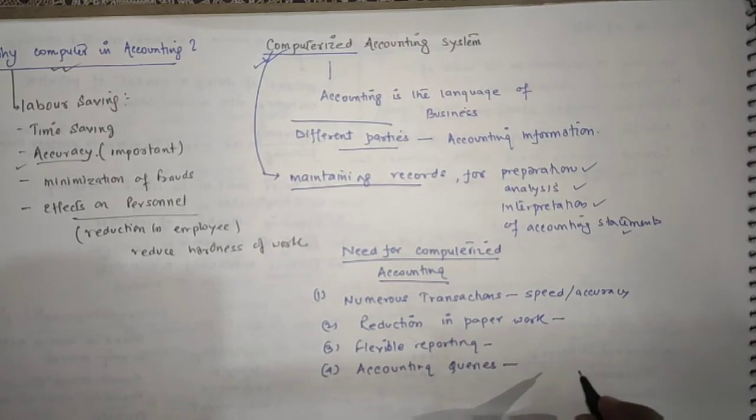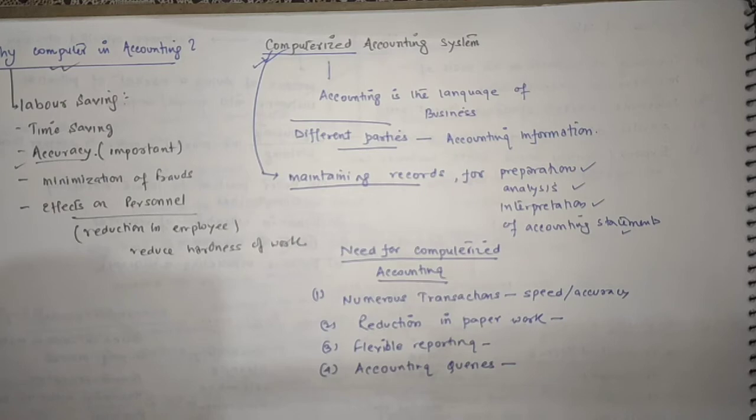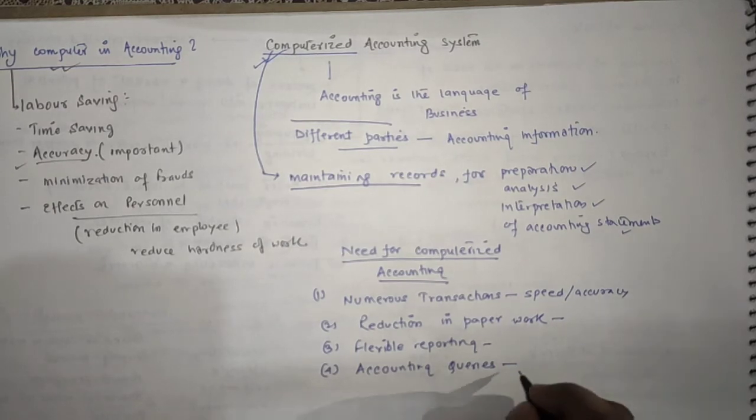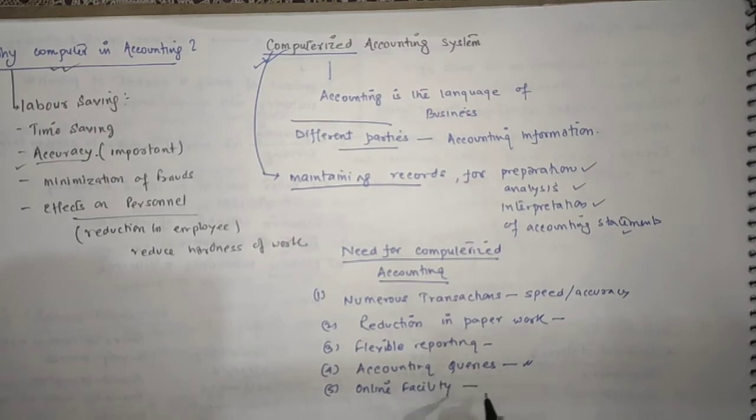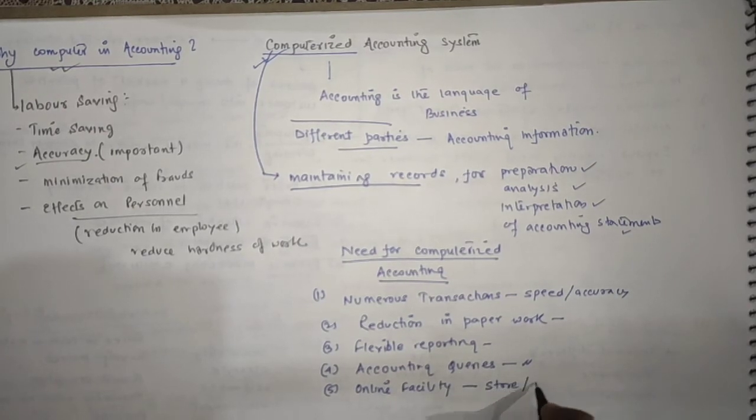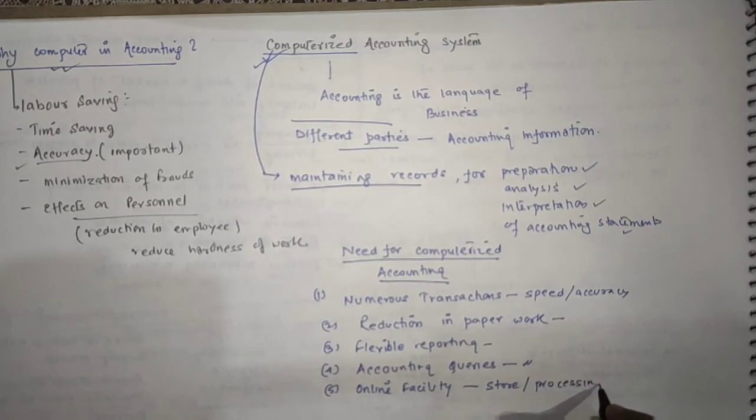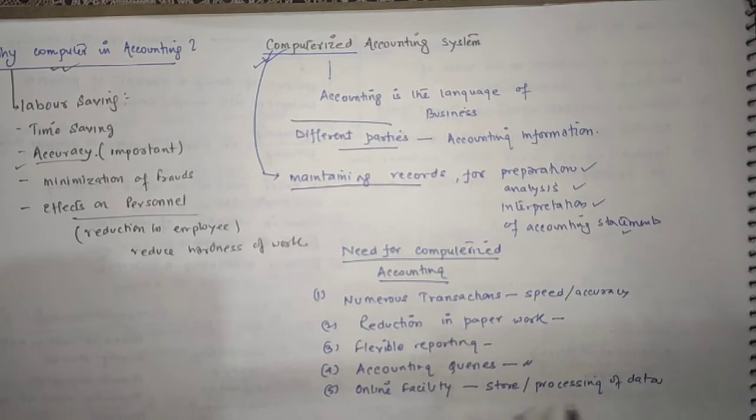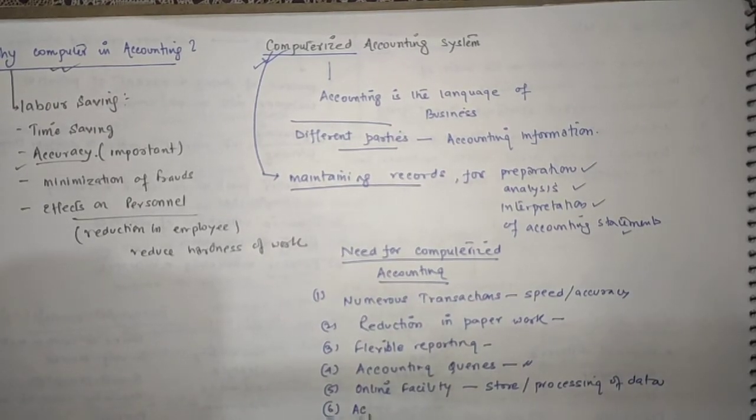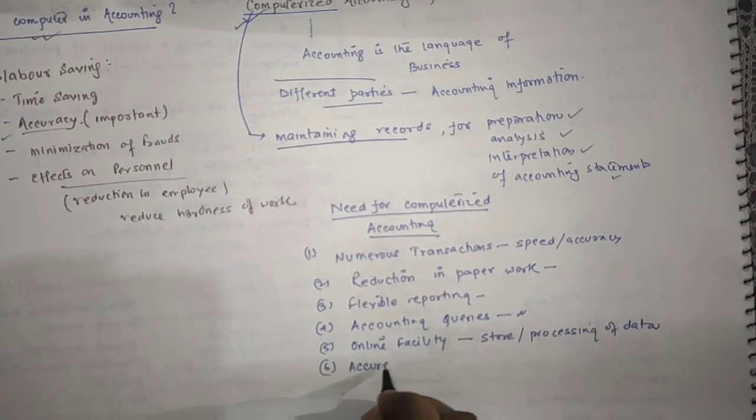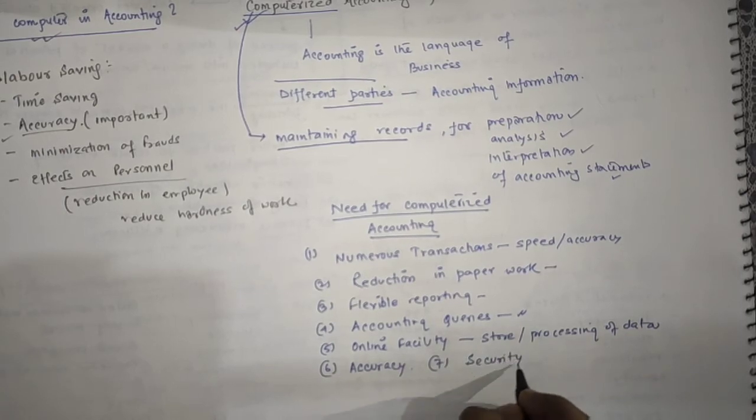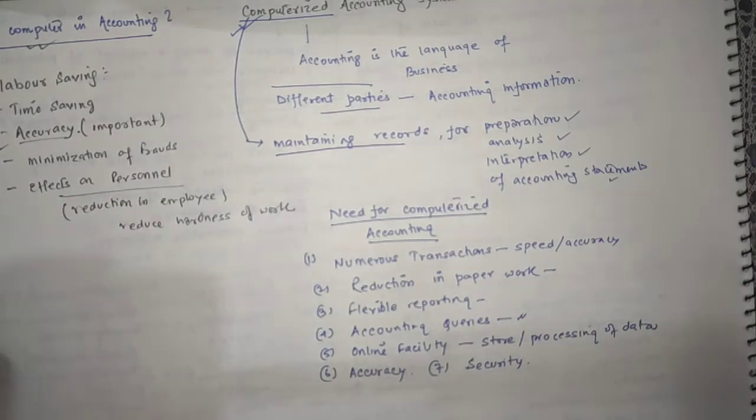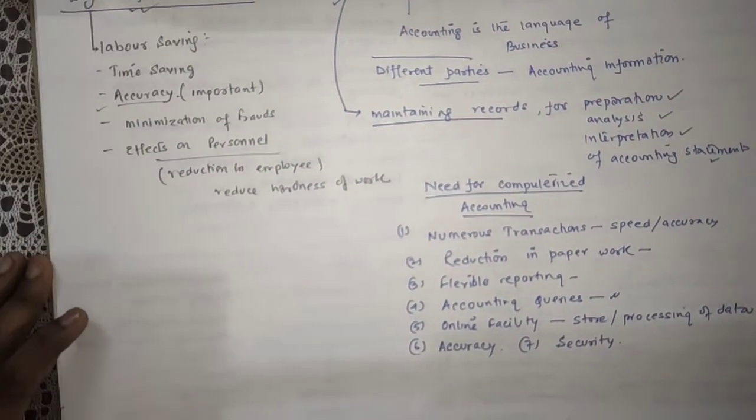These are the external parameters relating to videos, SQL - structured query language type database technology. Number five, about online facility - this helps in storage and processing of data online. Then number six is accuracy. Number seven is security. These are the points why we require computerized accounting.